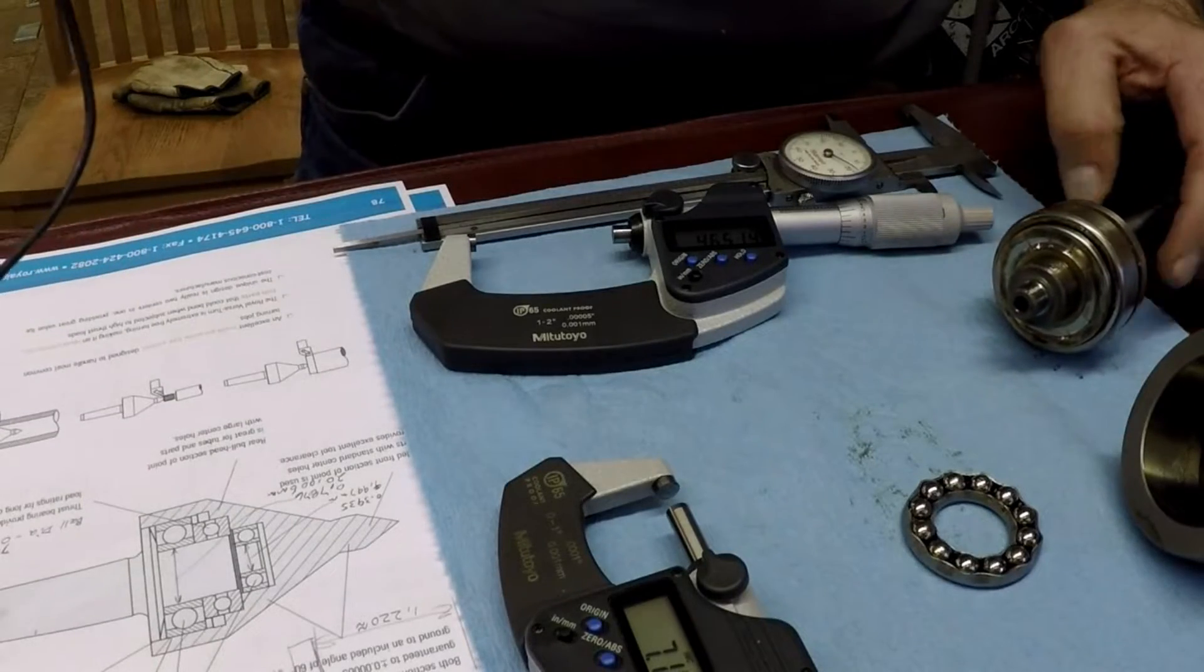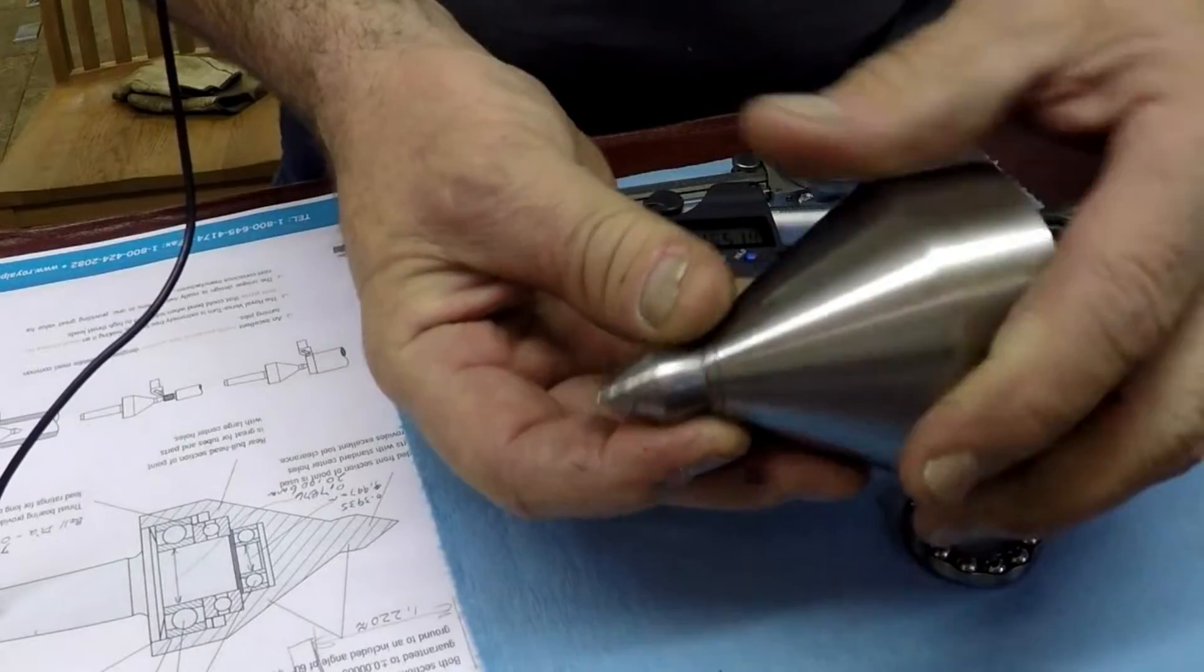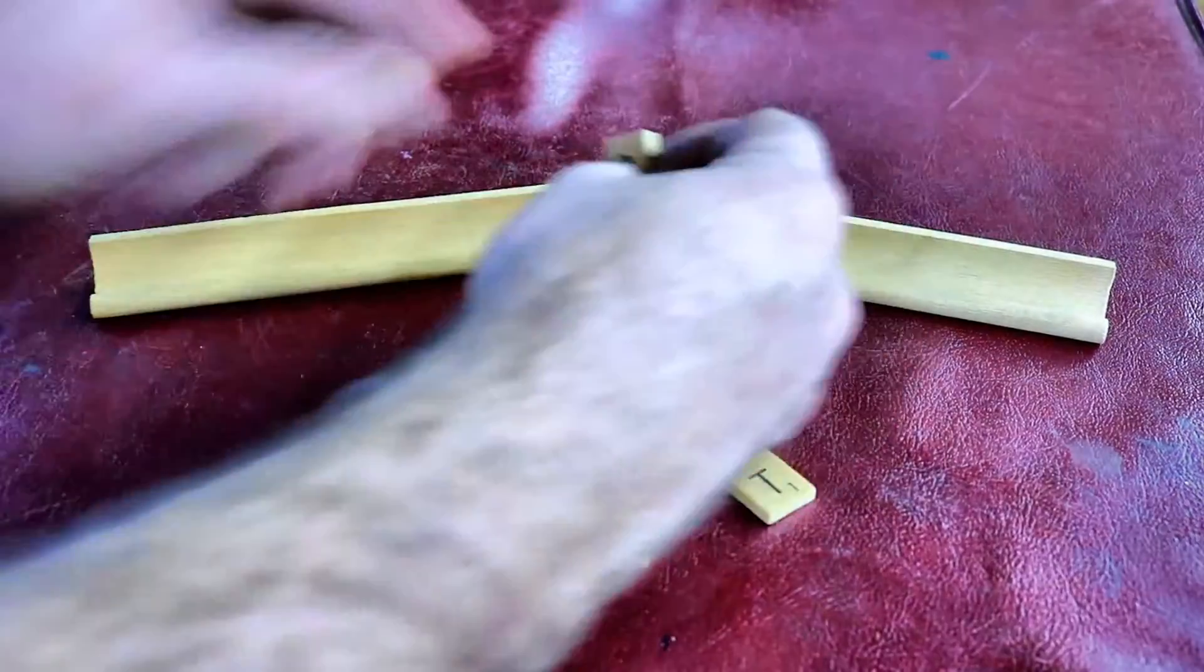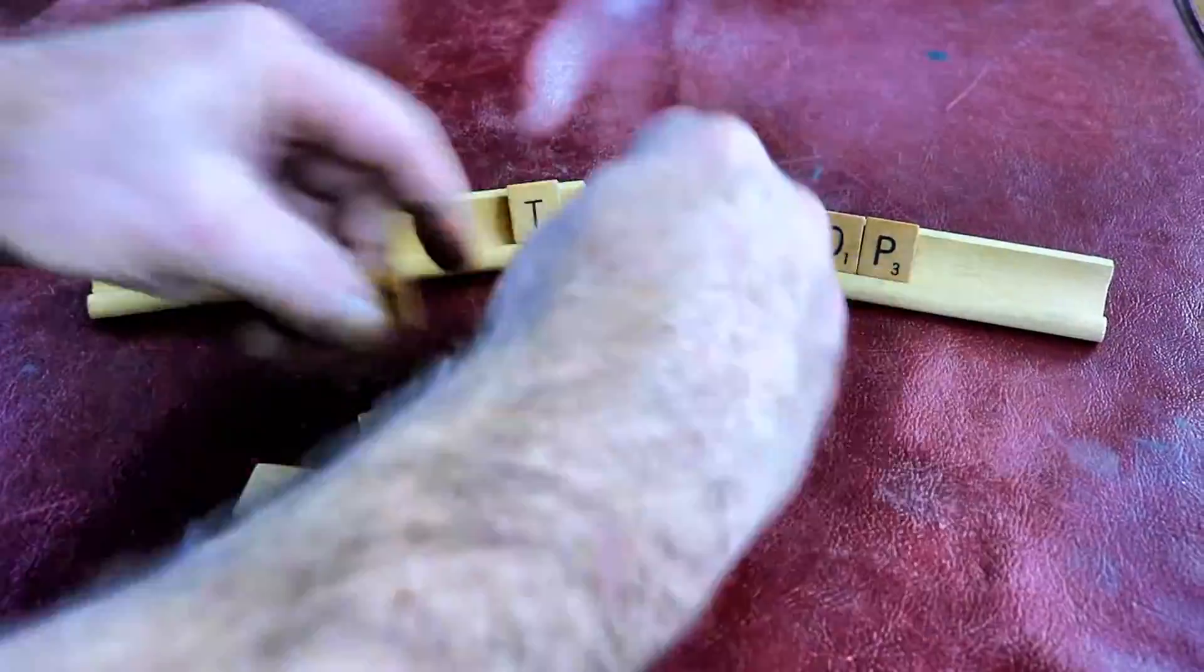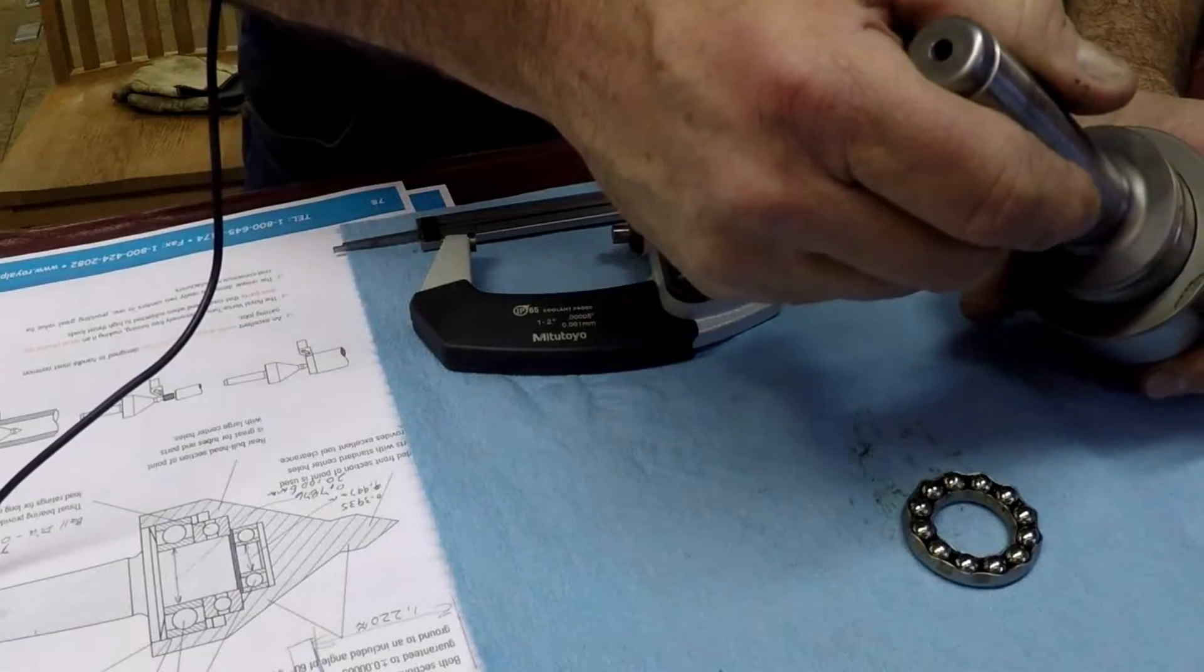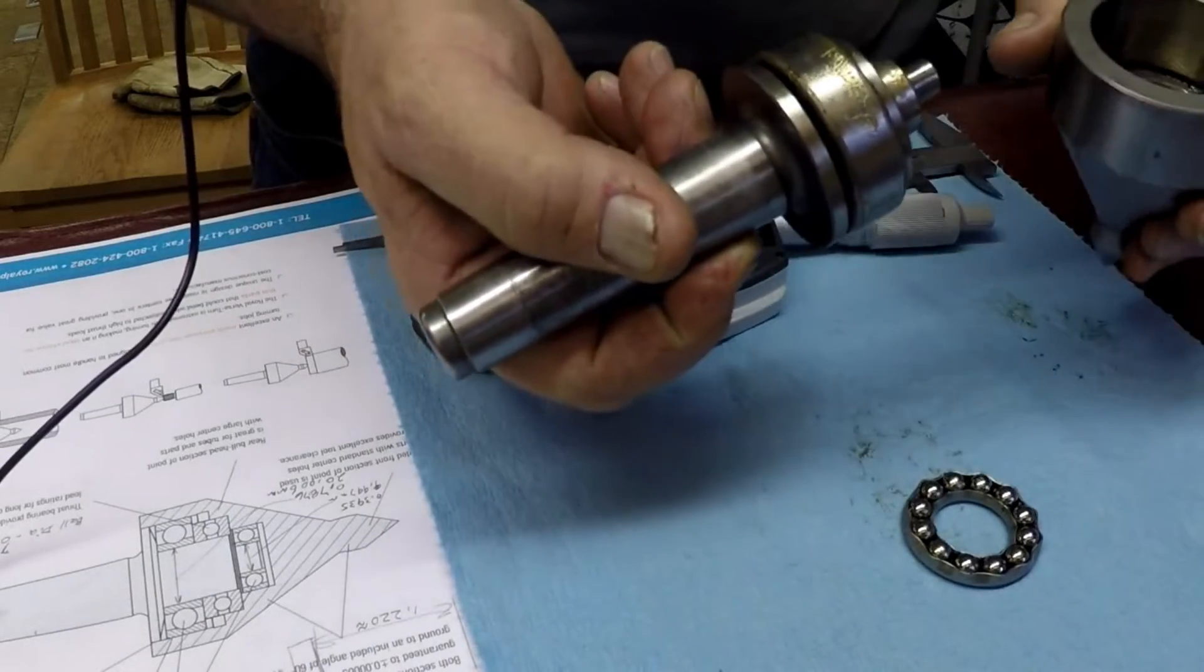This is my Royal Live Center, Versa Center, part number 10833. I'm looking at the thing and I'm going, oh boy, how's that come apart? There's no screws, there's no set screws, there's nothing.